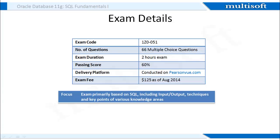The exam code for the Oracle Database 11G training we are referring to is 1Z0-051. There will be a total of 66 multiple choice questions that need to be attempted within a stipulated time of 2 hours. In order to clear the exam, you need to secure at least 60% marks. The exam is conducted online through Pearson VUE and the fee is $125.